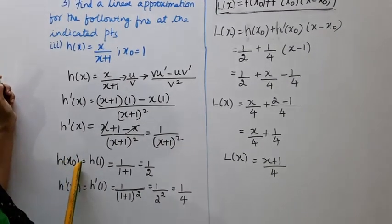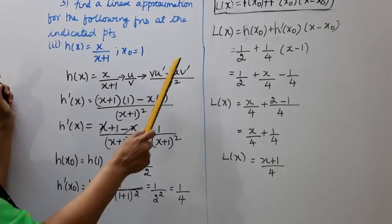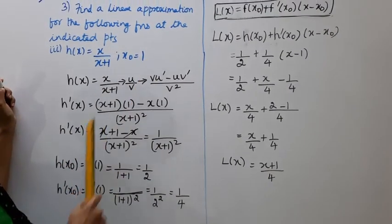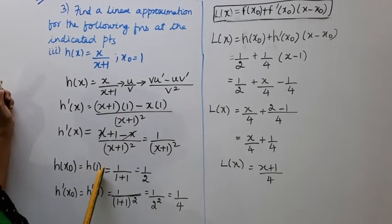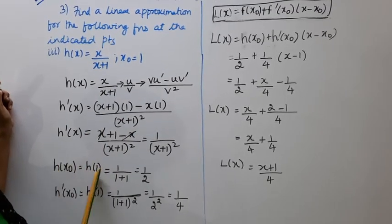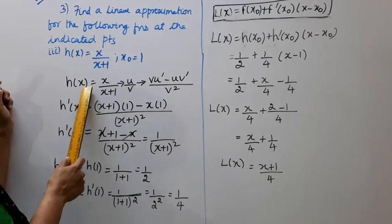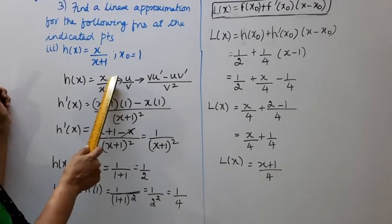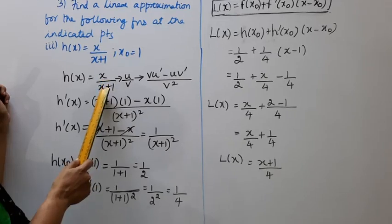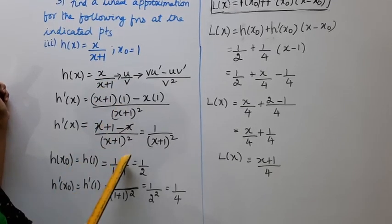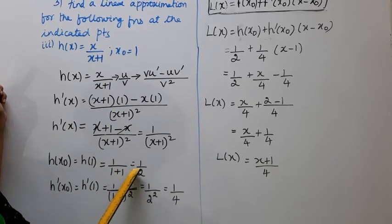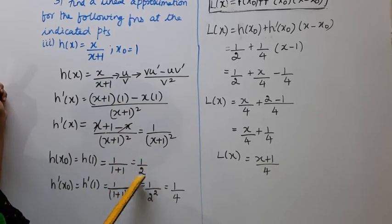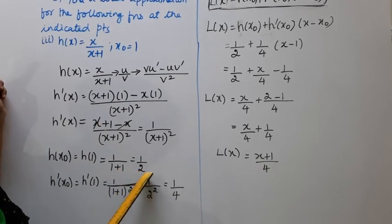Now, x naught is 1. h of 1: substitute x = 1 into h(x) = x/(x+1). That gives 1/(1+1) = 1/2.